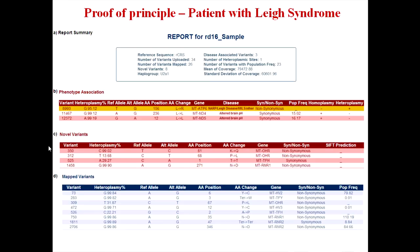For the Leigh syndrome patient report, a haplogroup of U2A1 was classified for the deciphered variations, and a confirmed pathogenic variant at position 8993 was reported to cause Leigh disease due to a T-to-G mutation resulting in an amino acid change of lysine to arginine within the MT-ATP6 gene. With this, I would like to thank you all for your kind attention, and for any further queries or suggestions please contact us.